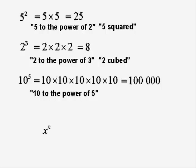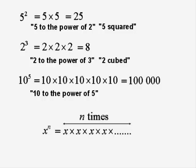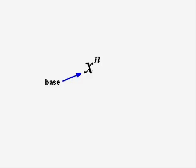In general, x to the power of n means n x's all multiplied together — so it's x multiplied by itself n times. Let's have a closer look at this expression: x with a little n. The x is what we call the base number, or just the base. The n, which we've been calling the power, is often called the index. The plural of the word index is indices, and that's why this topic is called indices.